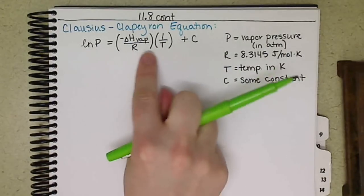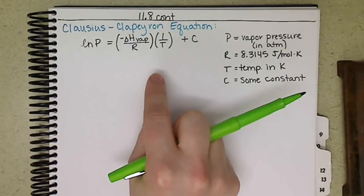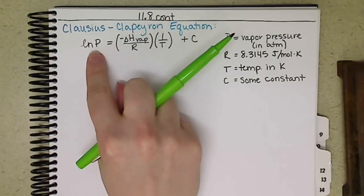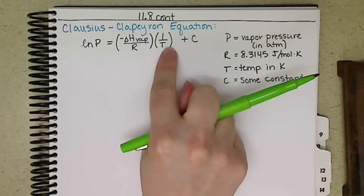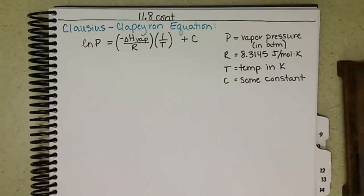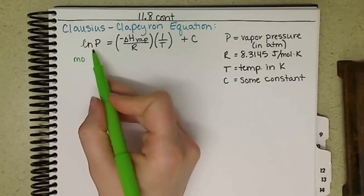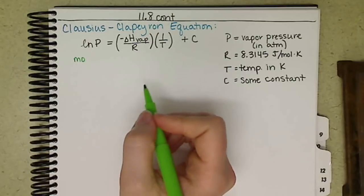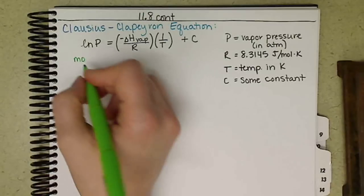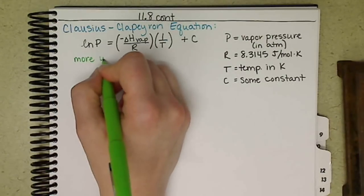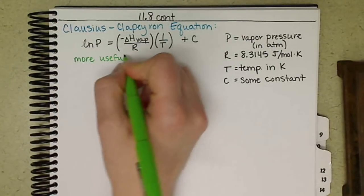What this equation allows us to do is it gives an opportunity to plot and have a linear line of natural log of P versus 1 over T. And that can help us estimate what our change in pressure is going to be in the delta H of vaporization when we change temperature or vice versa. So solving this equation for P1, P2, T1, and T2, we get it into just another form, but it's definitely the more useful form.